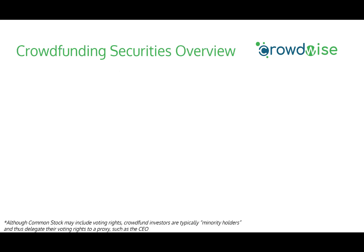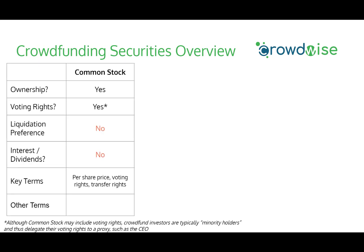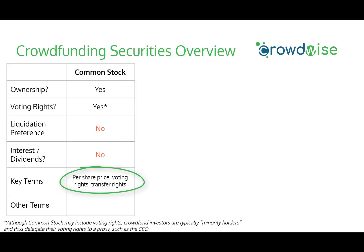Let's look at a matrix giving an overview of the different types of securities. Common stock is actual equity ownership in a business and typically gives voting rights. However, because crowdfunding investors are typically minority shareholders investing small amounts, these voting rights are usually delegated to a proxy such as the CEO. Common stock will not typically come with liquidation preference and usually doesn't have interest or dividends. Key terms are price per share, voting rights and delegation, and transfer restriction rights.